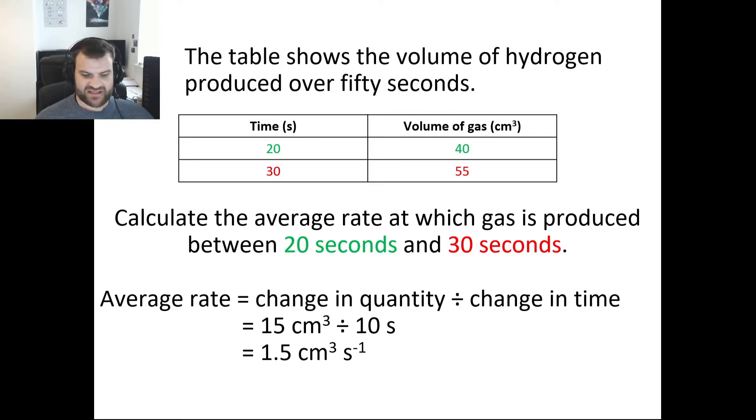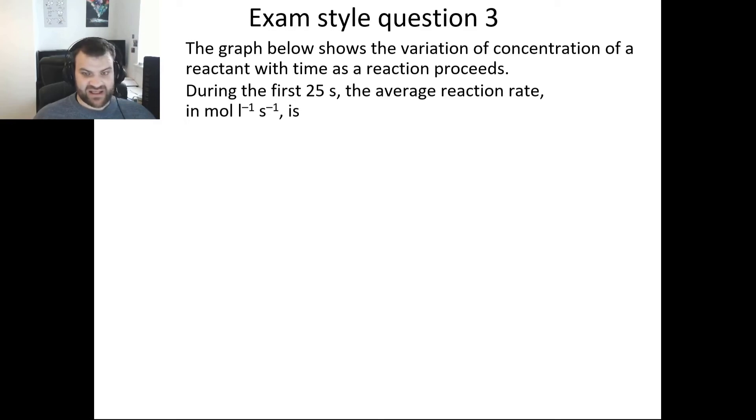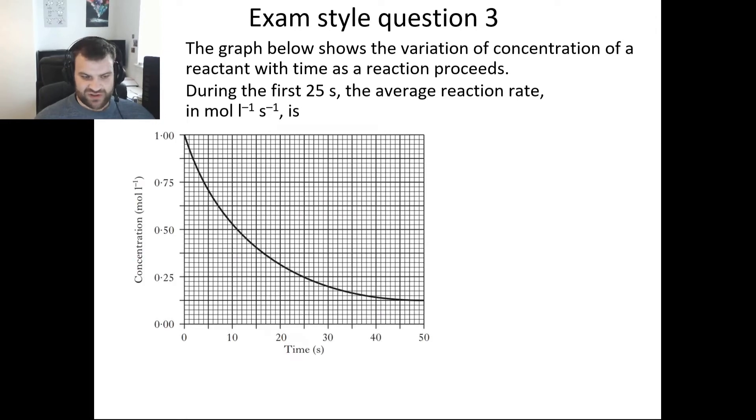The third way that they can ask you this is they can give you it in a graph and they can ask you to work it out for a particular time period. This question is wanting the first 25 seconds and it's wanting the average rate of reaction in moles per liter per second. With this one we've got concentration rather than volume or mass, but we just do it in exactly the same way. In this one it's a multiple choice question so we've got our options that we'll come back to at the end.